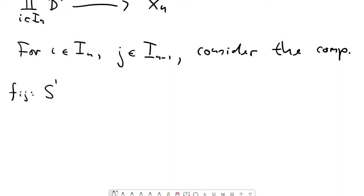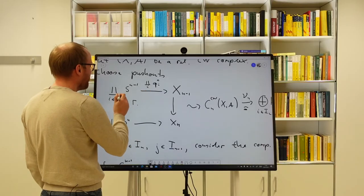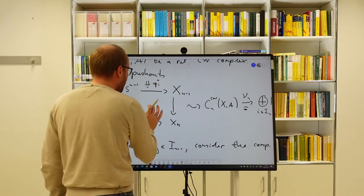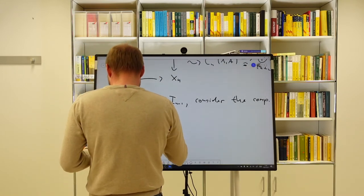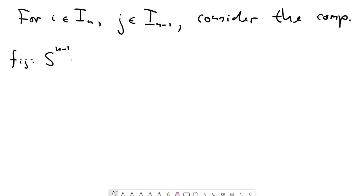We start in the n minus one dimensional sphere. From there, our choice of index i gives us an attaching map — one of the attaching maps of which we formed the coproduct — specifically the attaching map corresponding to i. That's the first morphism q_i^n going to the n minus one skeleton.